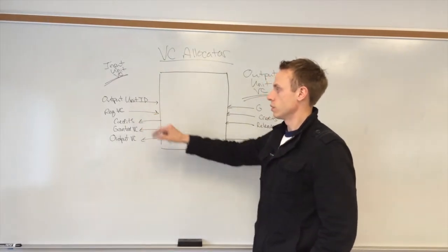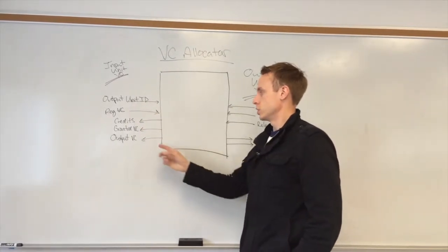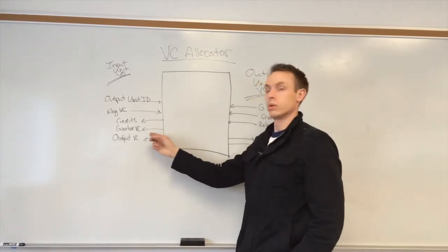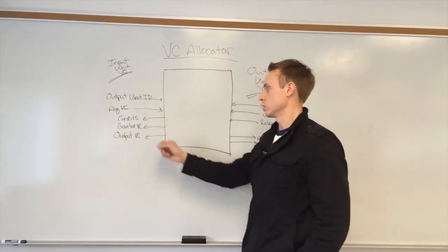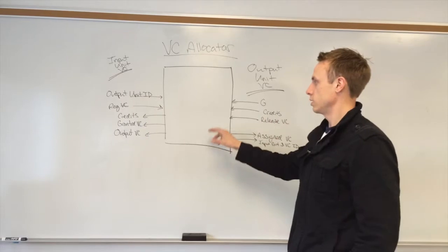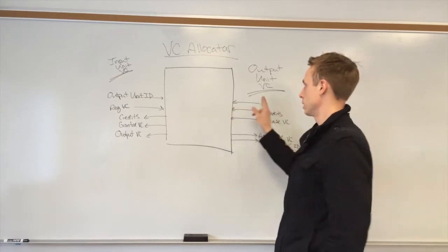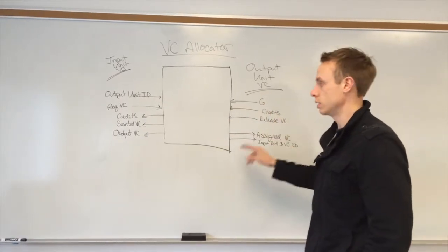This input unit virtual channel will pass in its ID, send in a request signal, and the virtual channel allocator will grant the virtual channel once it's been assigned, based on the output unit's virtual channel availability.